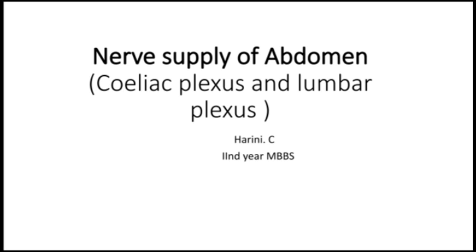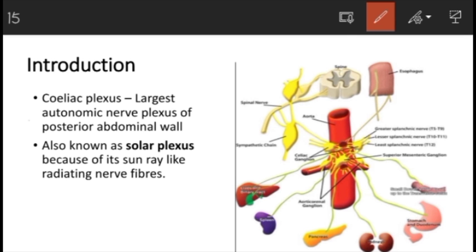Let's first discuss about the celiac plexus. The celiac plexus is the largest autonomic nerve plexus of the posterior abdominal wall. It is also known as the solar plexus because of its radiating nerve fibers — just like the sun rays, the celiac plexus has radiating nerve fibers.